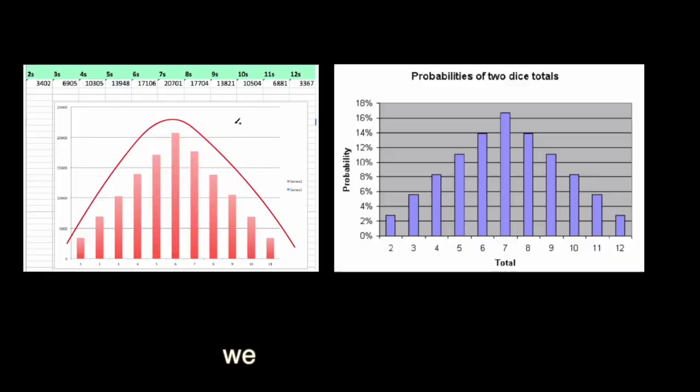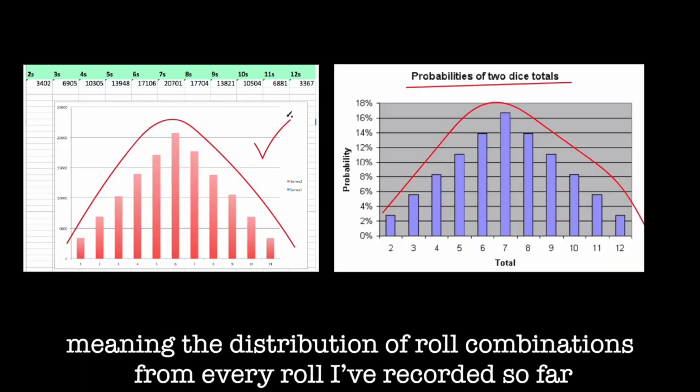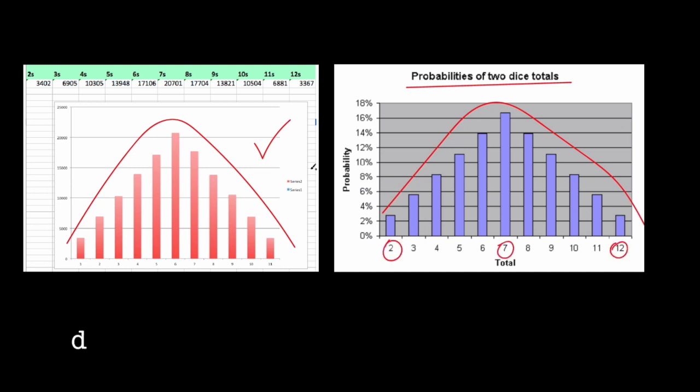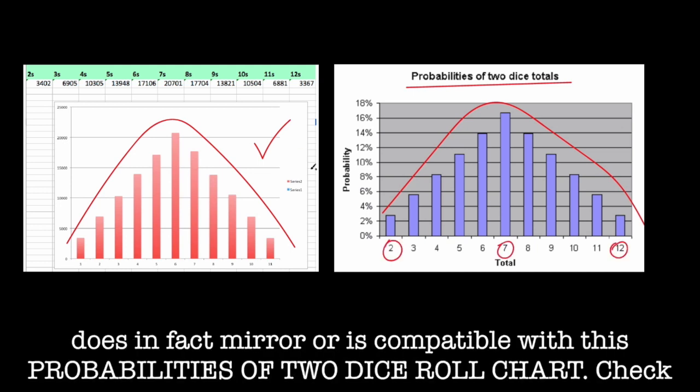And what do you know? We have a bell curve, meaning the distribution of roll combinations from every roll I've recorded so far does in fact mirror or is compatible with this probabilities of two dice roll chart.